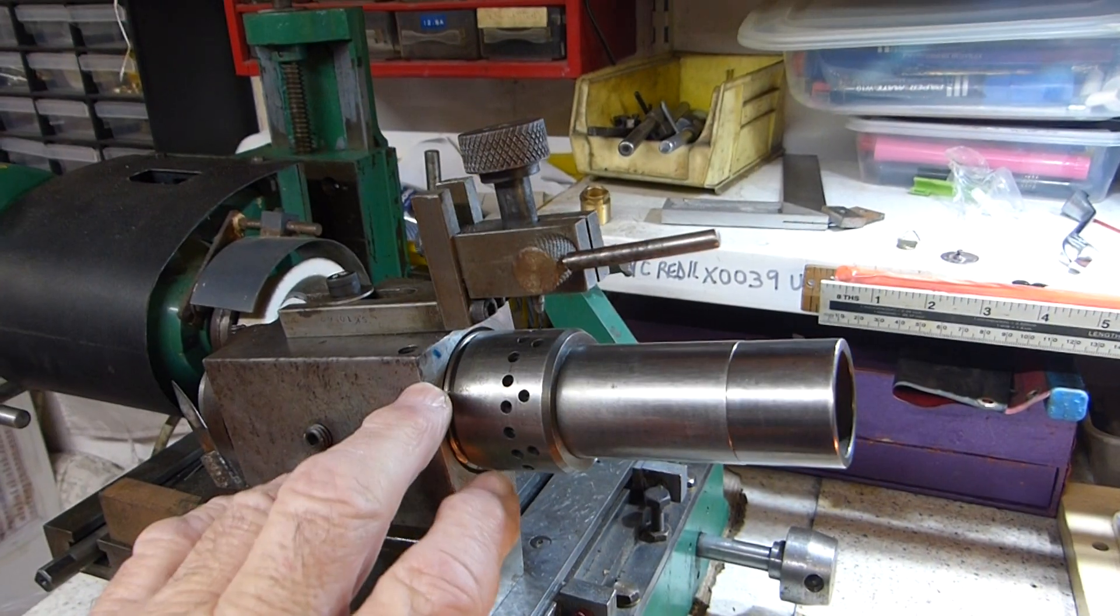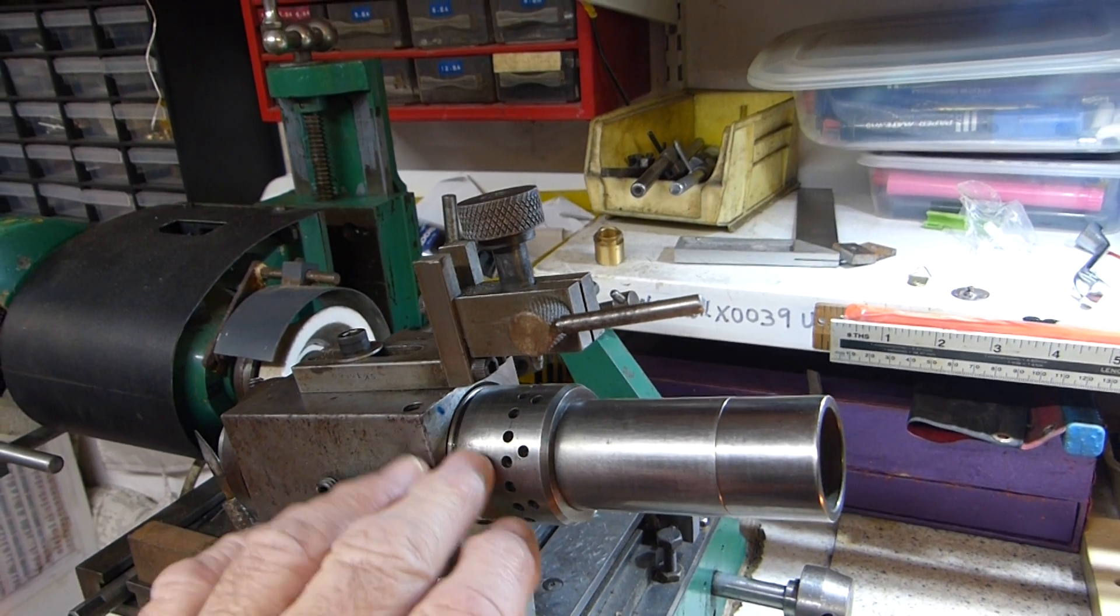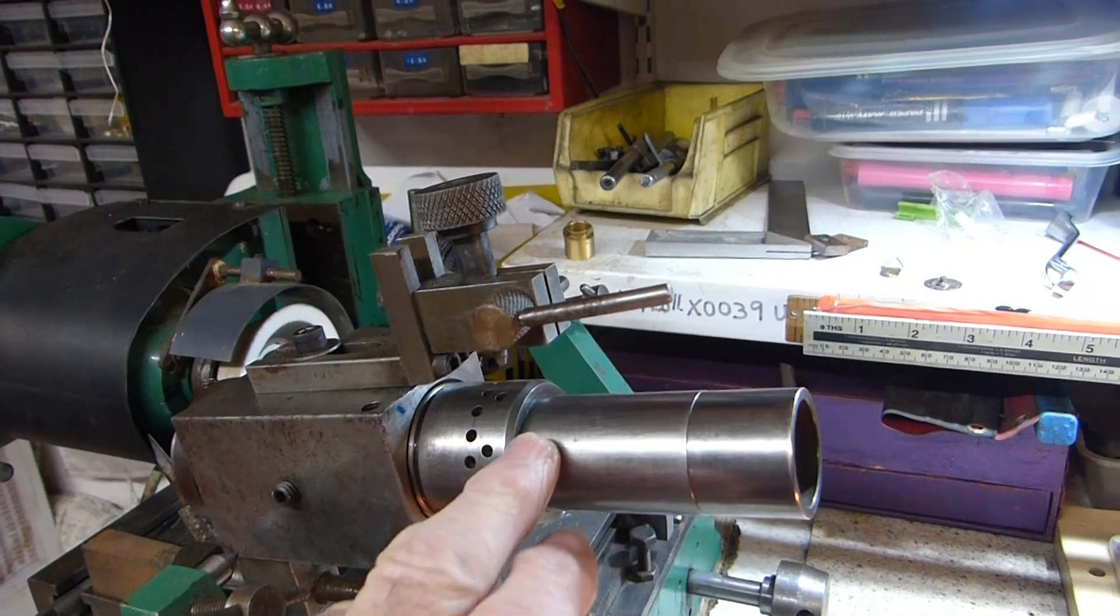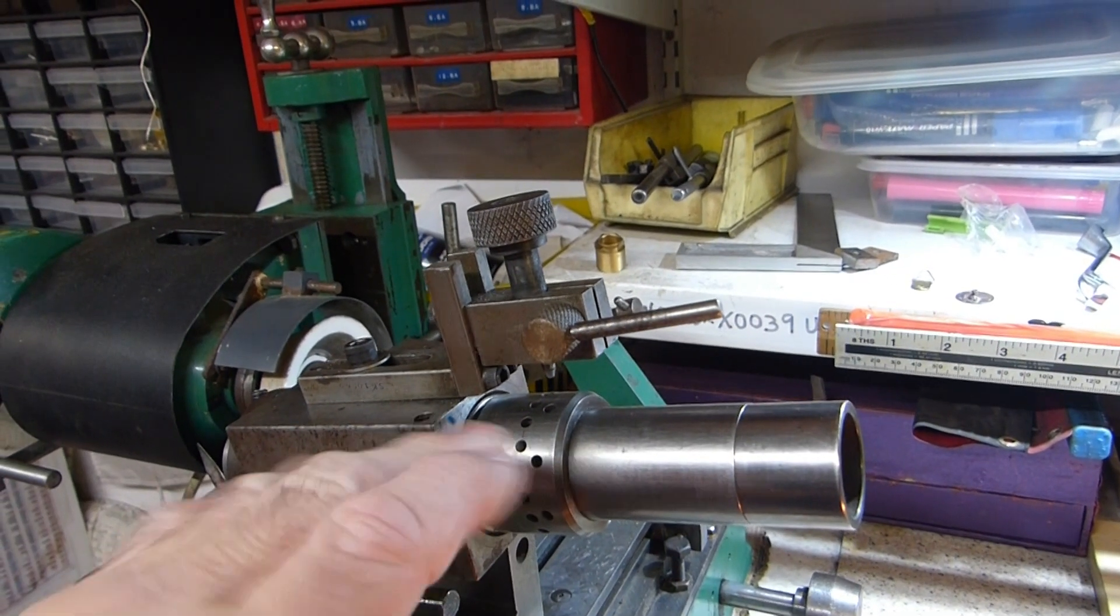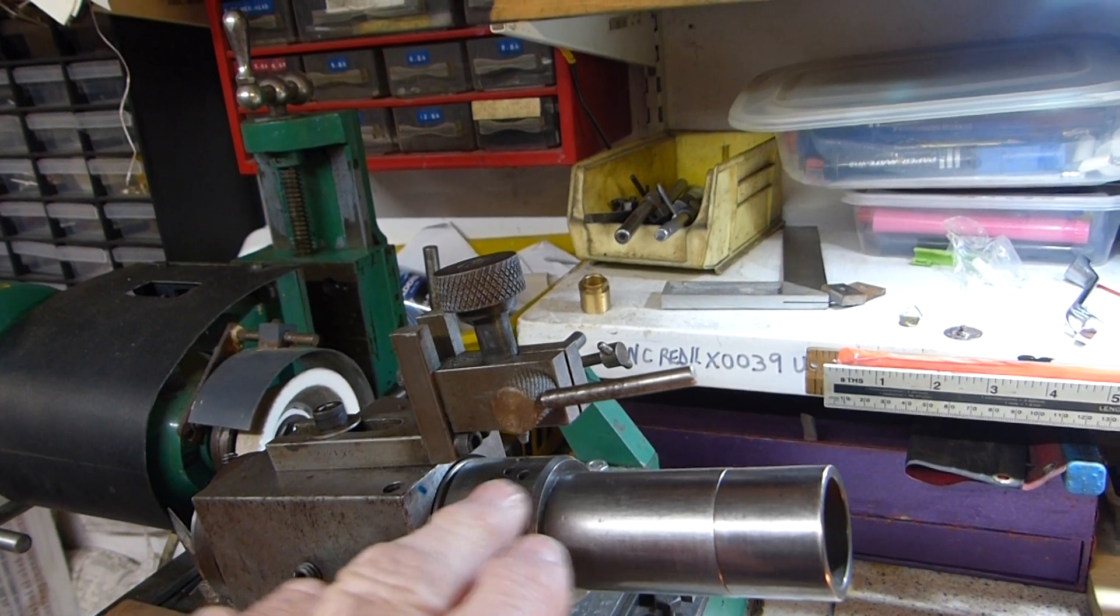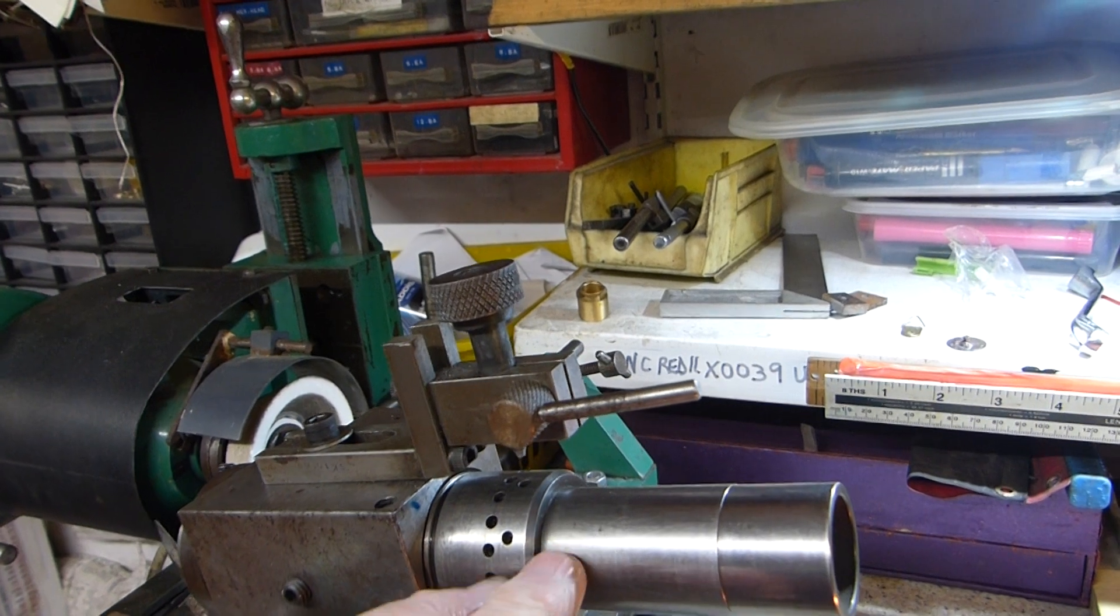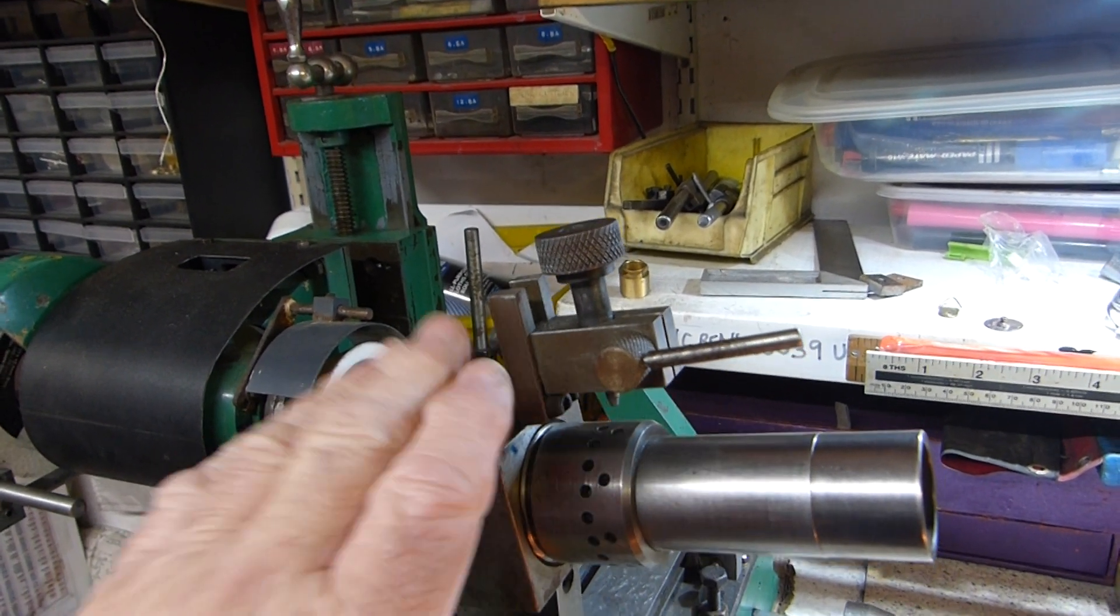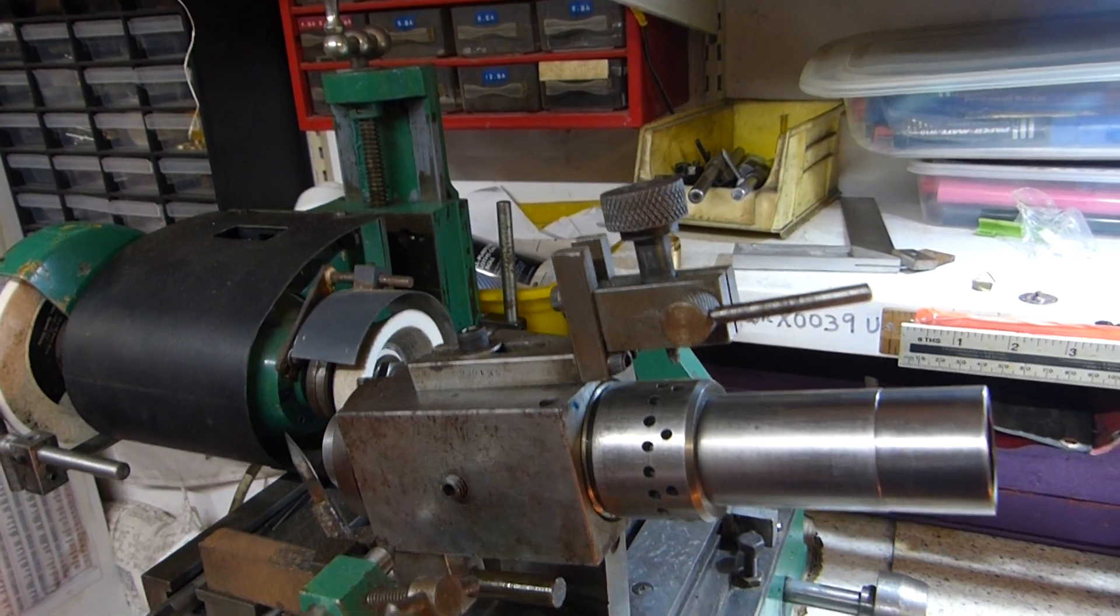Now when I grind my slot drills in this attachment I take off this indexing collar and then use the spindle which slides in and out of the steel bush, and with the spindle having no side movement the cutters are automatically ground parallel. I'll show this in my next video on sharpening slot drills.